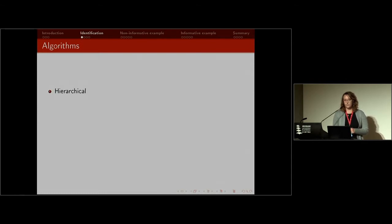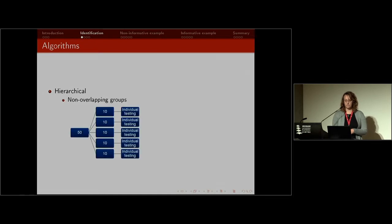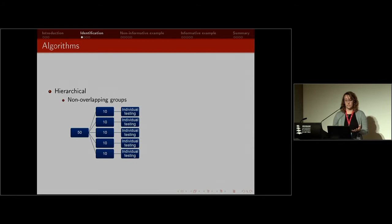So there are a number of algorithms that can be used for group testing, and most fall into two categories. The first is hierarchical testing, where you arrange individuals into non-overlapping groups. For example, you might start with a group of 50 individuals. If that tests positive, you'd split it into five groups of 10. And if one of those tests positive, you'd go to individual testing to confirm which individuals are positive.